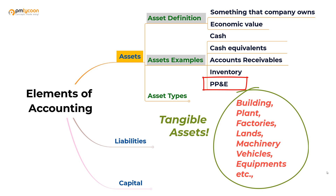One thing to remember is that some of these assets depreciate over a period of time, like machinery, the building, and equipment. The exception is land, which appreciates over time. We need to consider the depreciation value as well — I will talk about that when we cover depreciation. Think of an asset as anything you can convert to cash if you need capital for the business.